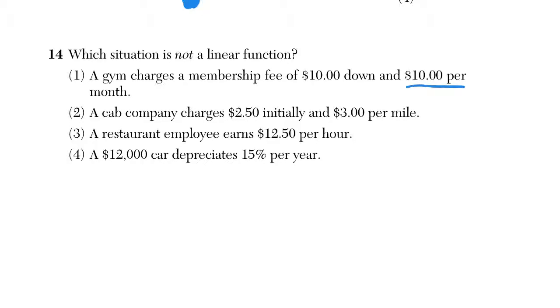Choice 1, we see $10 per month. That's a constant rate of change. Choice 2, no matter what the initial value here, $3 per mile. That's a constant rate of change. $12.50 per hour. They were very nice here, and they keep saying the word per.